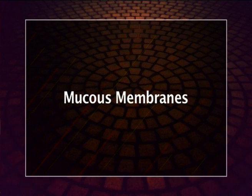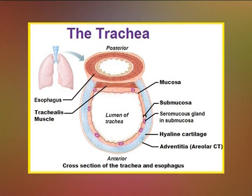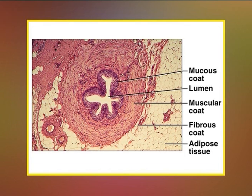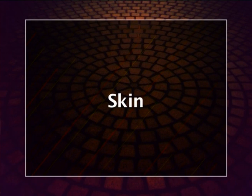Mucous membranes are present inside the digestive tract, respiratory tract, and urinogenital tracts. These mucous membranes resist the penetration of parasites into tissues from the gastrointestinal tract. Mucus also coats microorganisms and dust particles that enter through the nostrils into the respiratory tract, which are later flushed off with faeces.